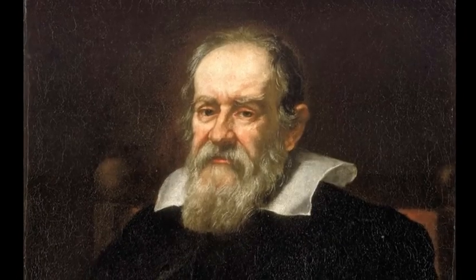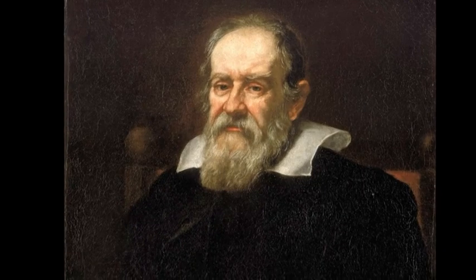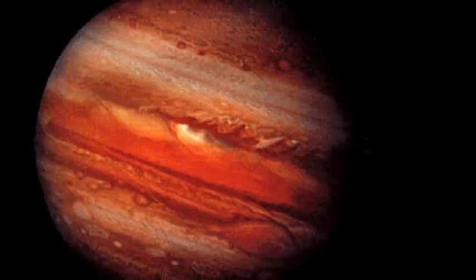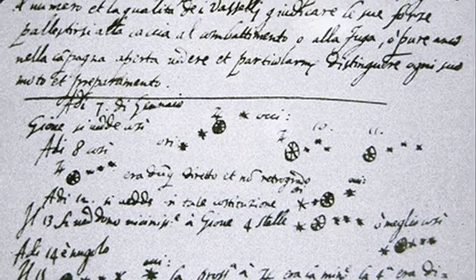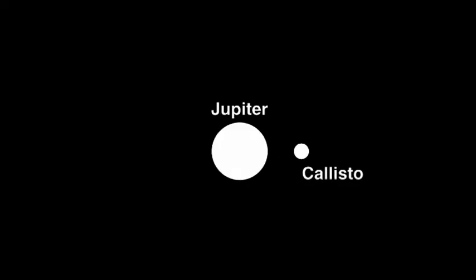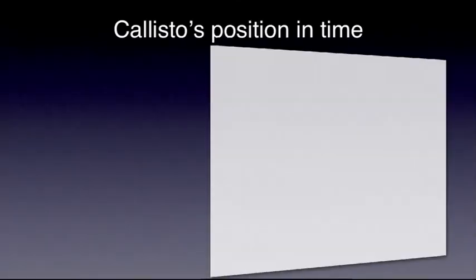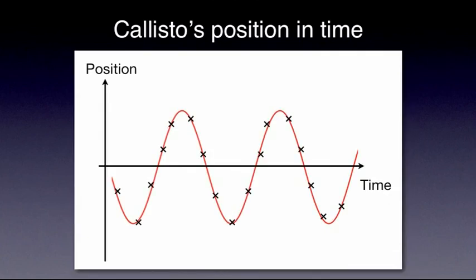Around 1610, Galileo Galilei discovered the four largest moons of Jupiter. He made careful observations of the positions of these celestial bodies over a period of time. The simulation on the screen is a simplified version of what Galileo would have observed for one of the moons, let's say Callisto. A graph of the position of Callisto in relation to Jupiter as a function of time is shown on the screen. The graph has all the characteristics of one that would describe a simple harmonic motion.